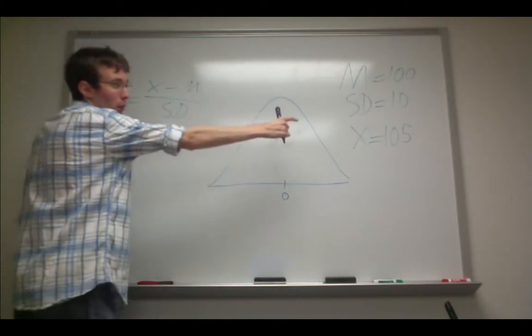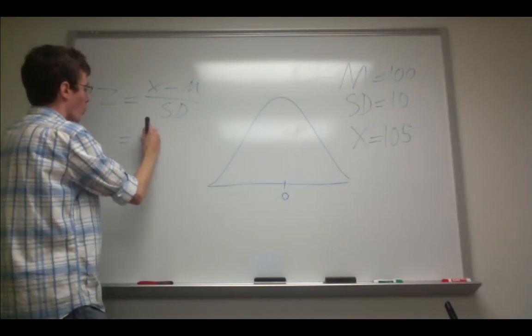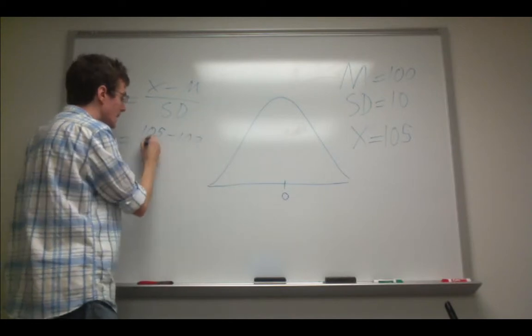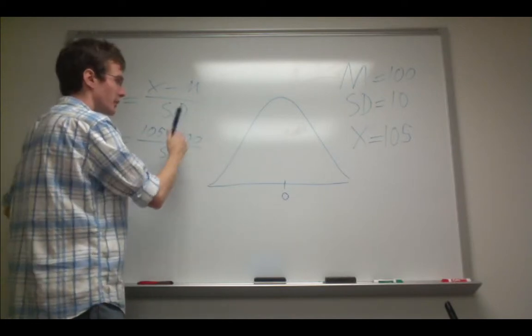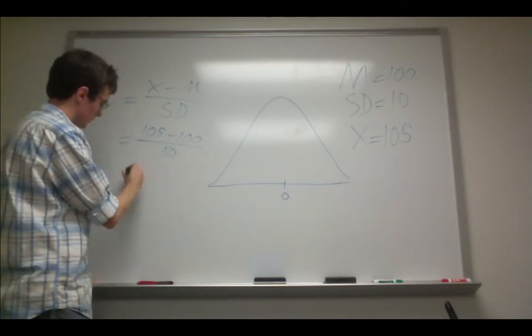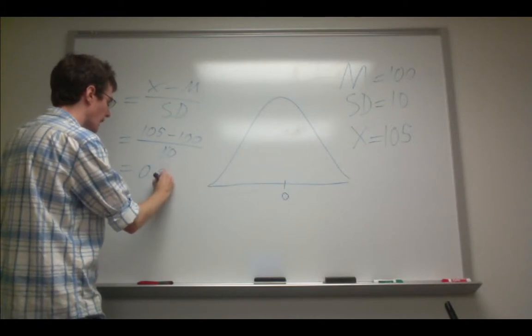So once we have this, we can plug in all these numbers into this formula. And we get 105 minus 100, which is the mean, and we divide by the standard deviation, which is 10. That equates to 5 over 10, which is 0.5.